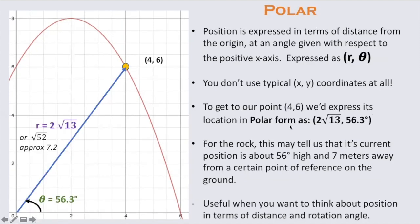Well that brings us into today's lesson, which is polar coordinates. Polar coordinates give you position expressed in terms of distance from the origin at an angle given with respect to the positive x-axis expressed as r comma theta.